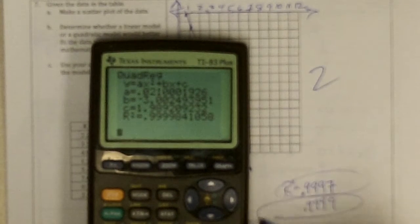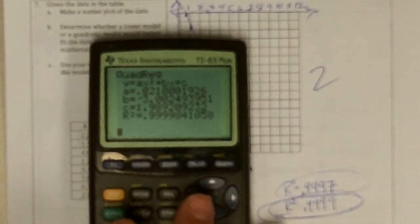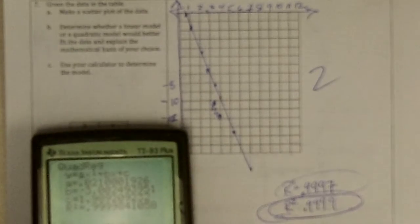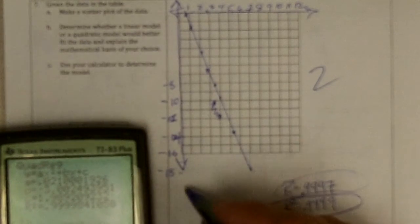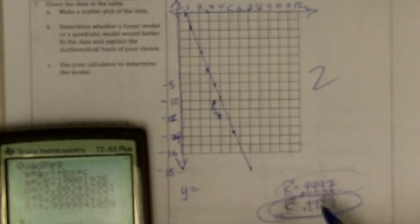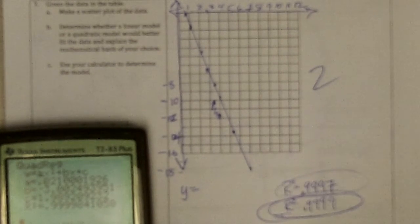So, it says that the quadratic is actually a better fit than the linear. But the two models are, for the linear, they're both really, really close, really close to 1. So, you could use either one.